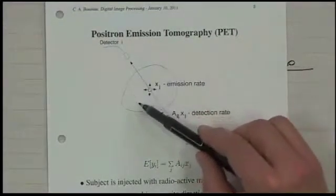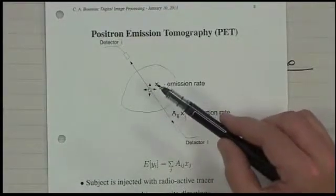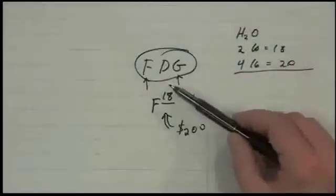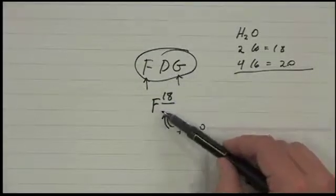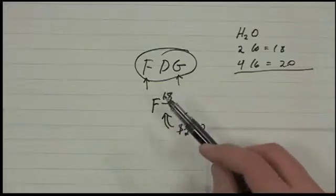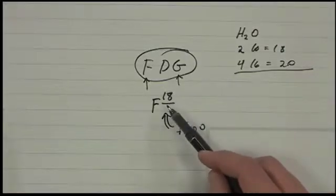The FDG floats around. It's metabolized. When it's metabolized, what happens is that the FDG may break down. So, but the fluorine, the F18 doesn't change, right. Chemical changes do not change the atomic structure of the molecules.